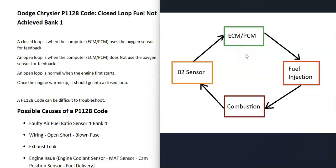When the engine first starts, the computer is not using the O2 sensor for feedback to adjust the air-fuel ratio mixture — it's basically guessing how much fuel should be going into the engine. But as soon as the engine warms up, the O2 sensor should be reporting back to the computer how much oxygen was burnt off, and the computer will have the information it needs to get the correct air-fuel ratio mixture. But when it's in an open loop, the O2 sensor is not sending that information, so the computer is just guessing how much fuel should be going into the cylinders.